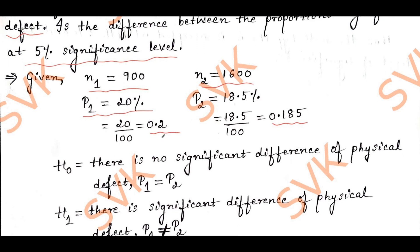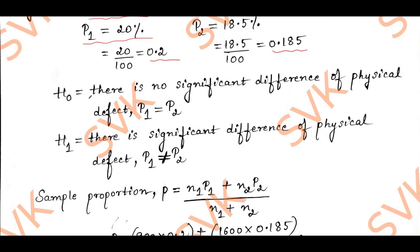I am going to define the null hypothesis as follows. The null hypothesis is there is no significant difference of physical defect, so P1 = P2. The alternative hypothesis H1 is there is significant difference of physical defect, P1 ≠ P2.